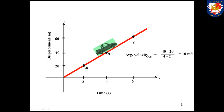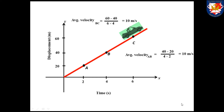The average velocity from B to C equals 60 minus 40 divided by 6 minus 4, which also equals 10 metres per second. In a straight line, we just calculate the gradient of the line, and for all these points we get the same average velocity or the same gradient. So in a straight line, we can conclude that we have a constant rate of change.